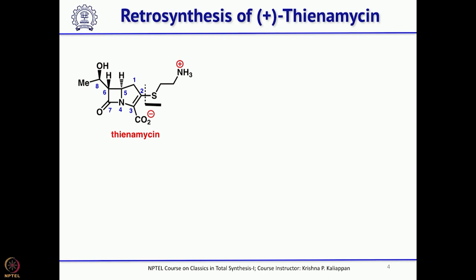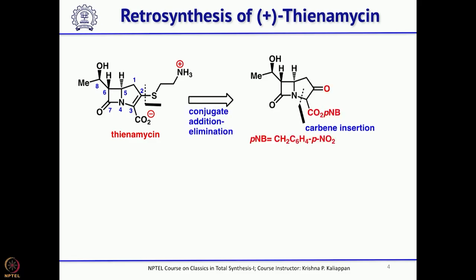In the retrosynthesis of thienamycin, the first disconnection involved cleavage of the C–S bond. This bond can be introduced through an addition–elimination reaction: if you have a beta-ketoester, you can make the corresponding enol ether or vinyl chloride, and then treatment with the corresponding thiol can undergo 1,4-addition (conjugate addition) followed by elimination, making it easy to introduce the thiol group.